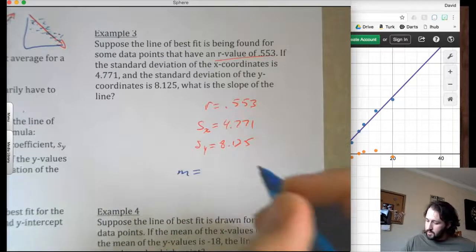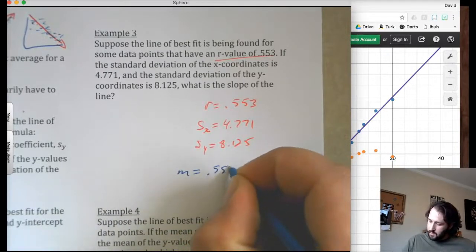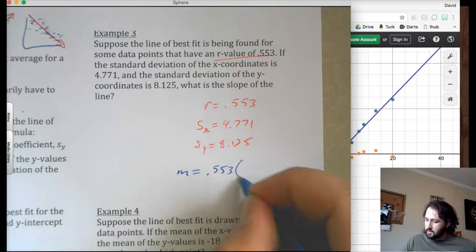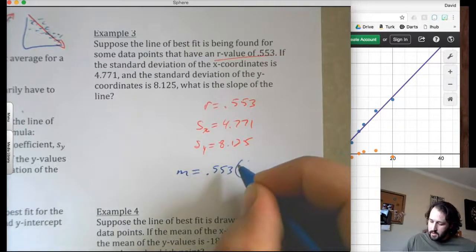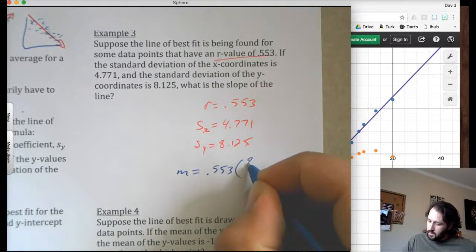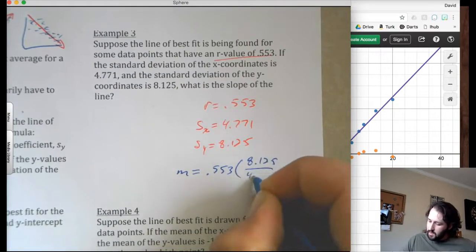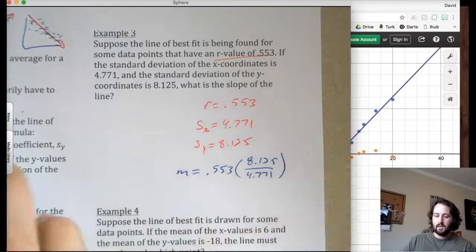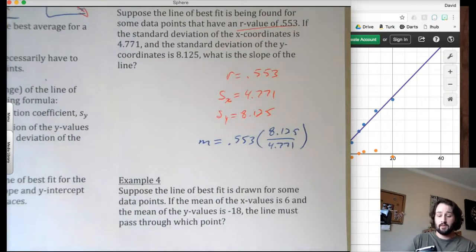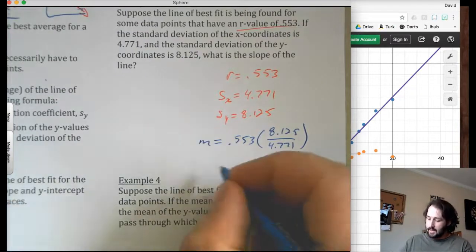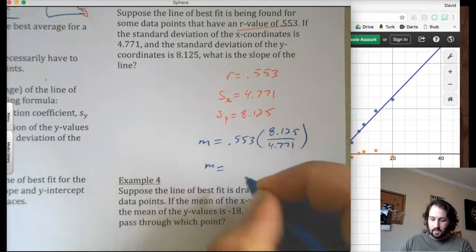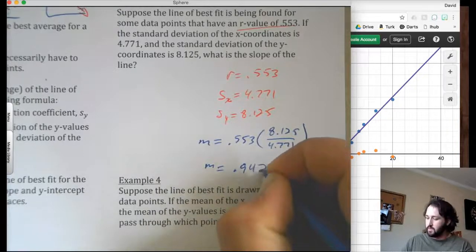So m equals the residual. So 0.553, which is a really bad residual. So s sub y, so 8.125 over 4.771. Then just type all of that in your calculator. So 0.553 times 8.125 divided by 4.771. So I get m to be 0.942.